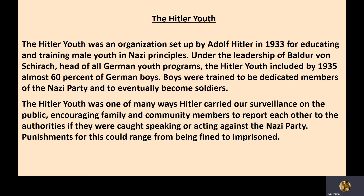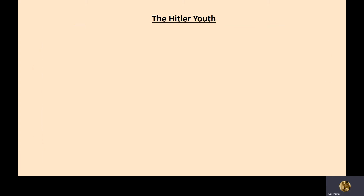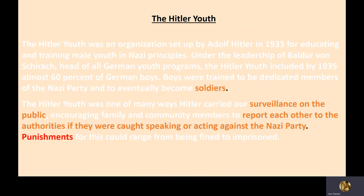They also believed in the defence of Germany 'by blood and soil', represented in their brown and red uniforms. They believed in fascism — violent state control of its own people, enforcing the law with violence. The Hitler Youth carried out surveillance on the public: if you were caught speaking or acting against the Nazi party, community members would be reported by the Hitler Youth. They acted as spies among their own people.